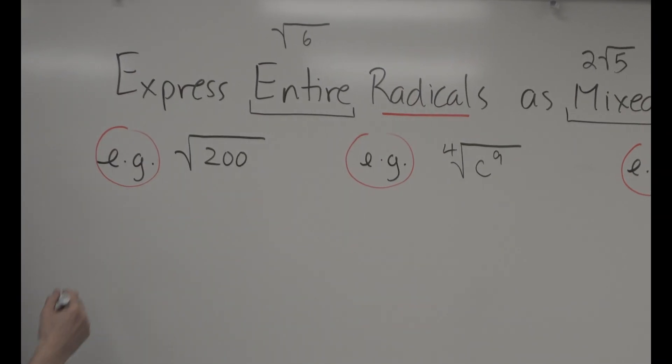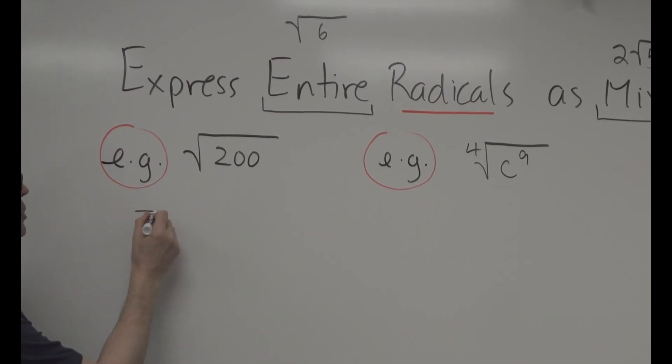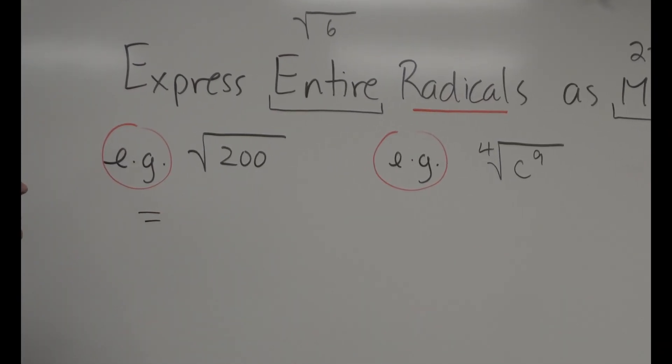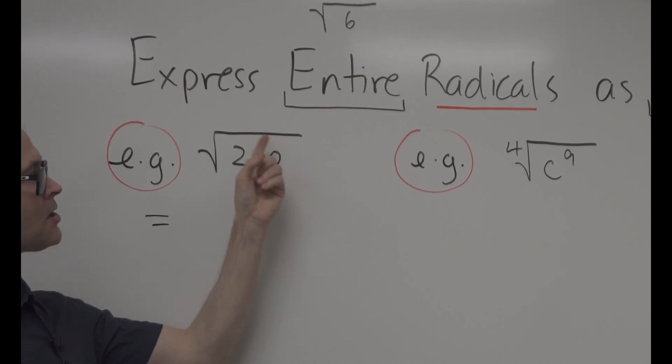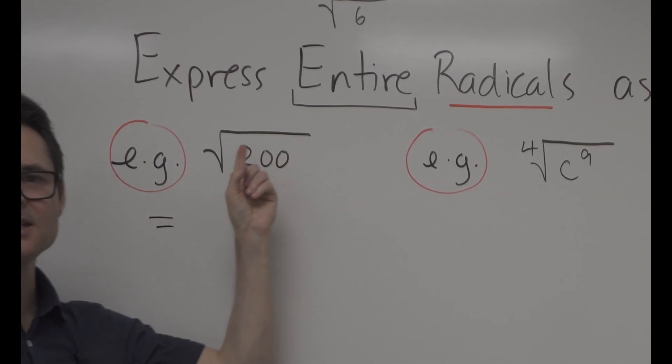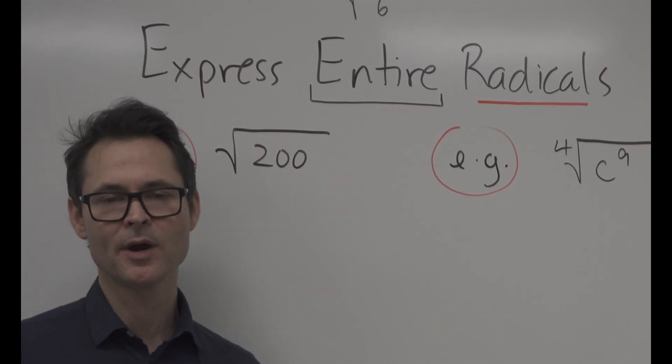Let's go through some examples. There are different ways to do it — maybe a couple of methods. One way is to always look to see if you know your perfect squares.